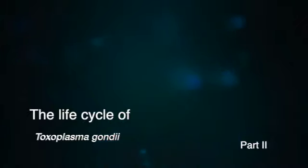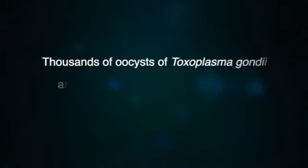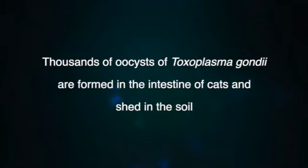The Life Cycle of Toxoplasma gondii, Part 2. Thousands of oocysts of Toxoplasma gondii are formed in the intestine of cats and shed in the soil.